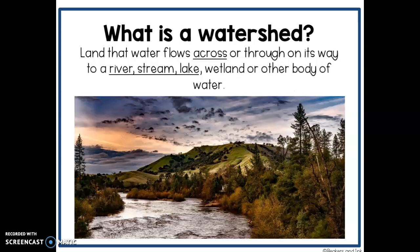Let's go ahead and take that into watersheds. We would define a watershed as the land that water flows across or through on its way to a river, a stream, a lake, a wetland, or another body of water. Looking at a picture of a mountain, when the water flows down it would flow across the land in the valley and into the river.